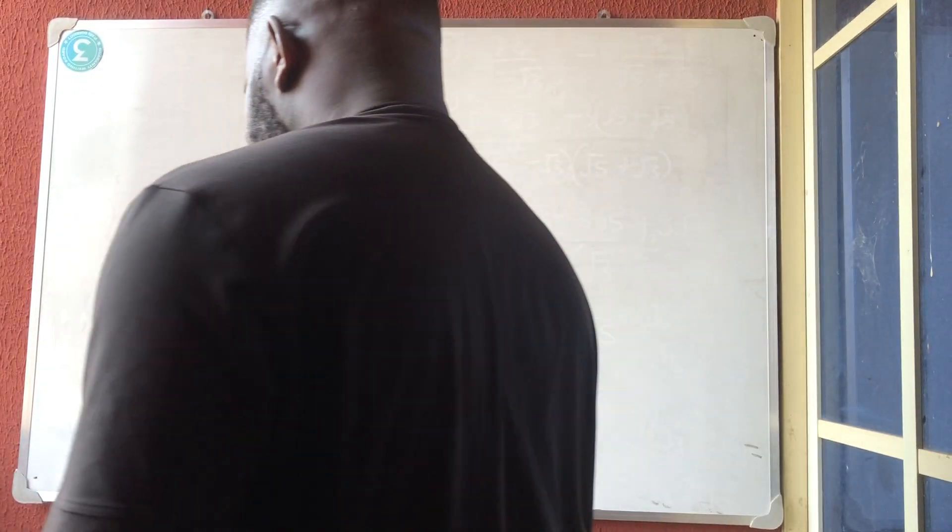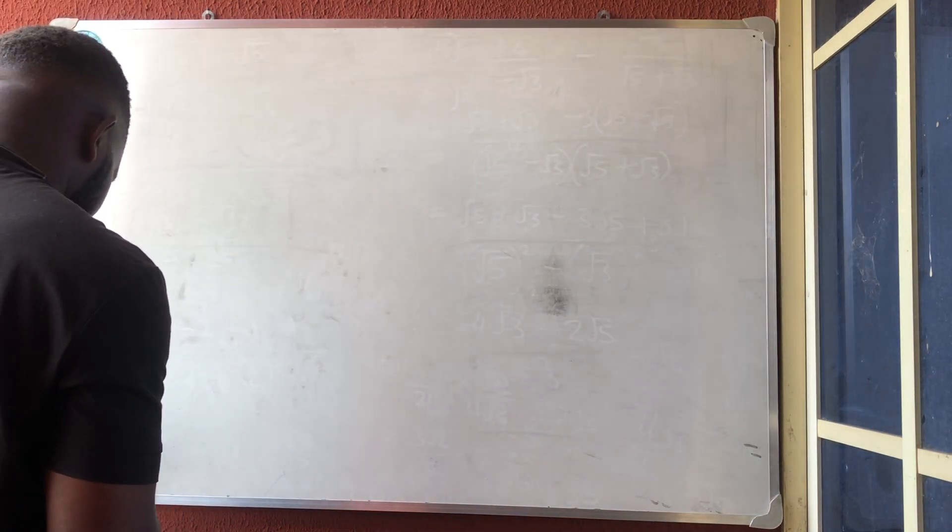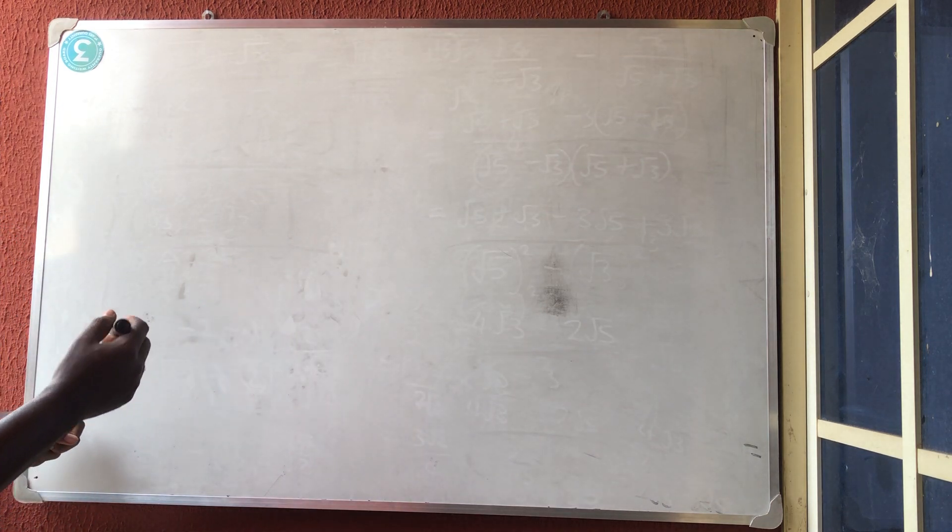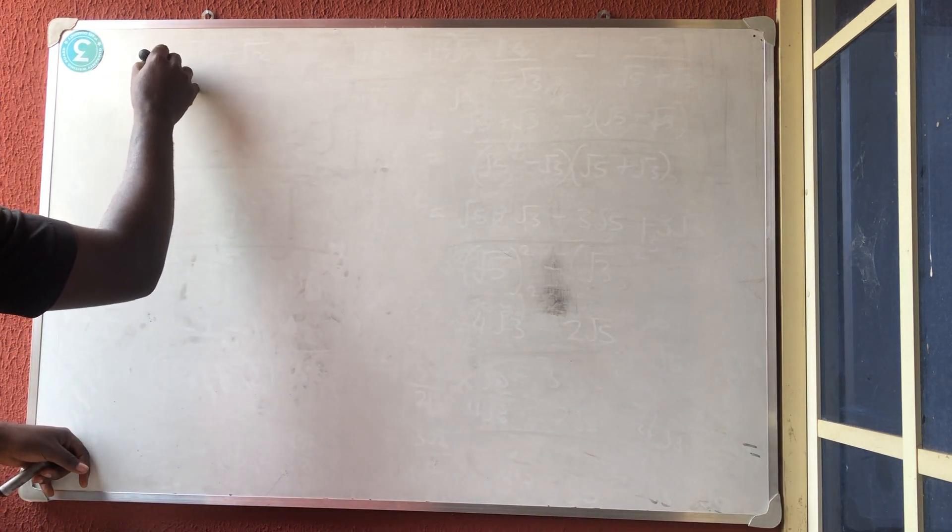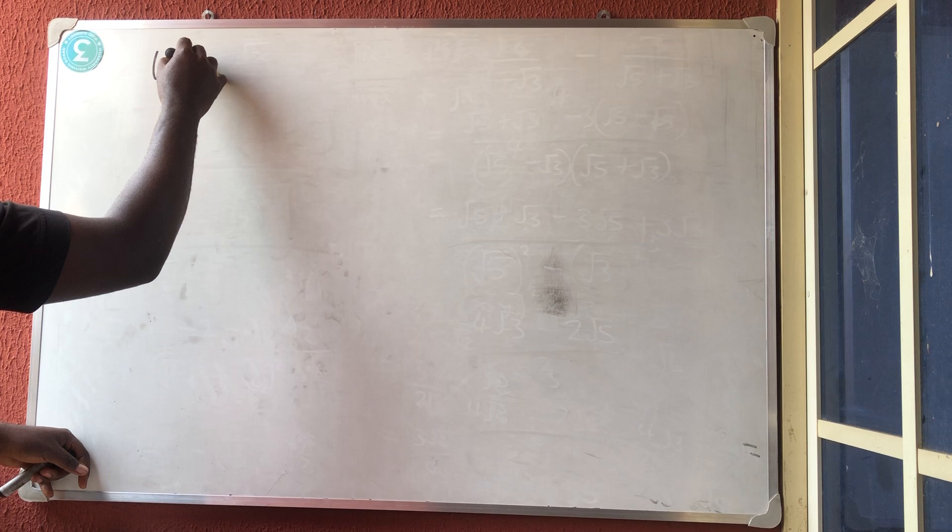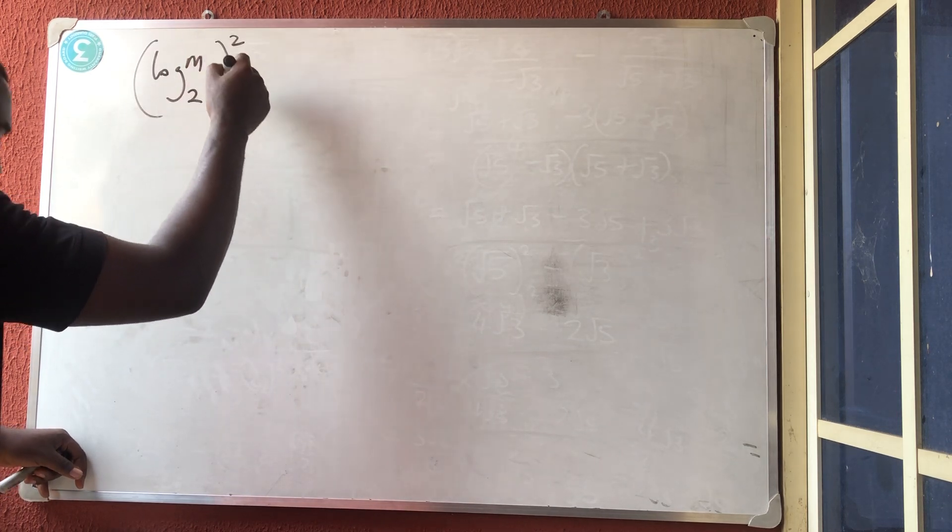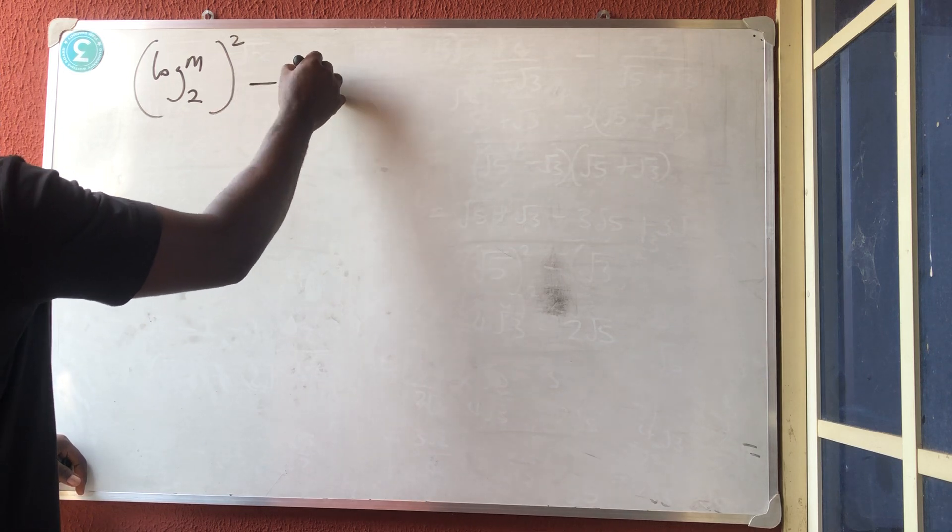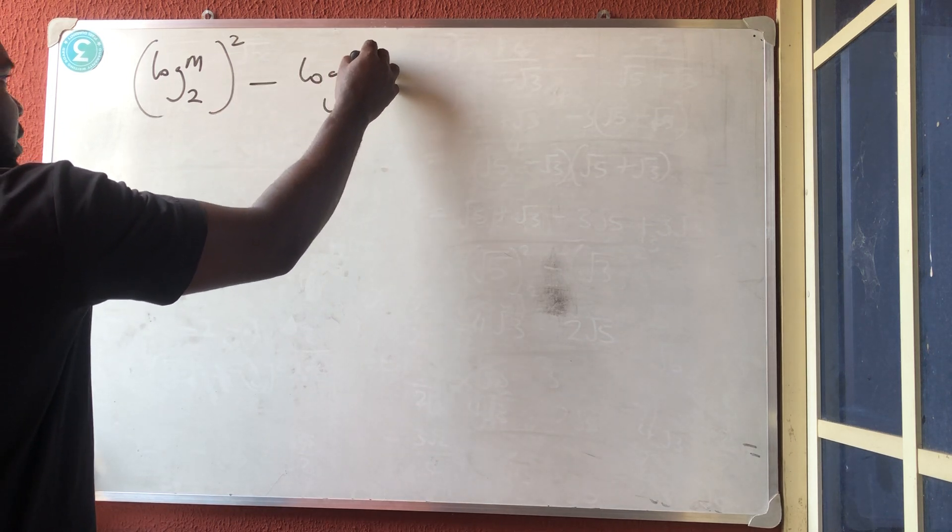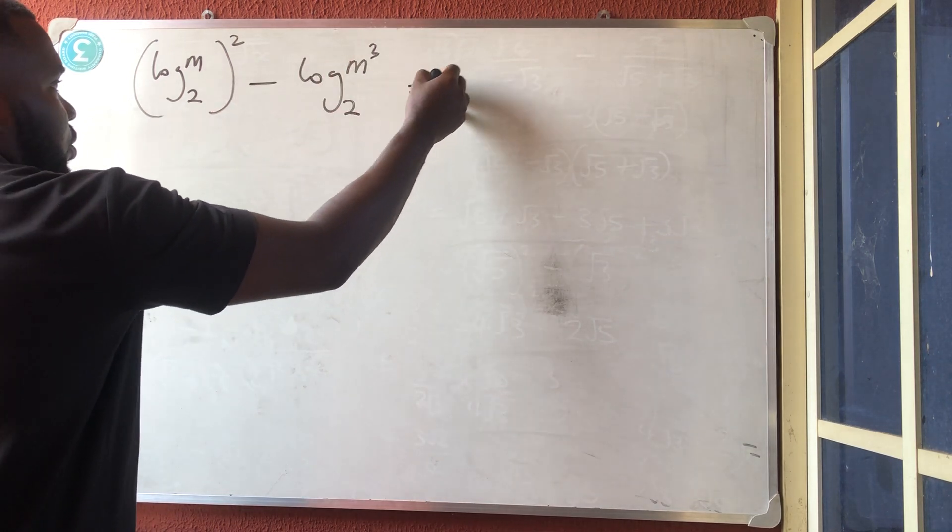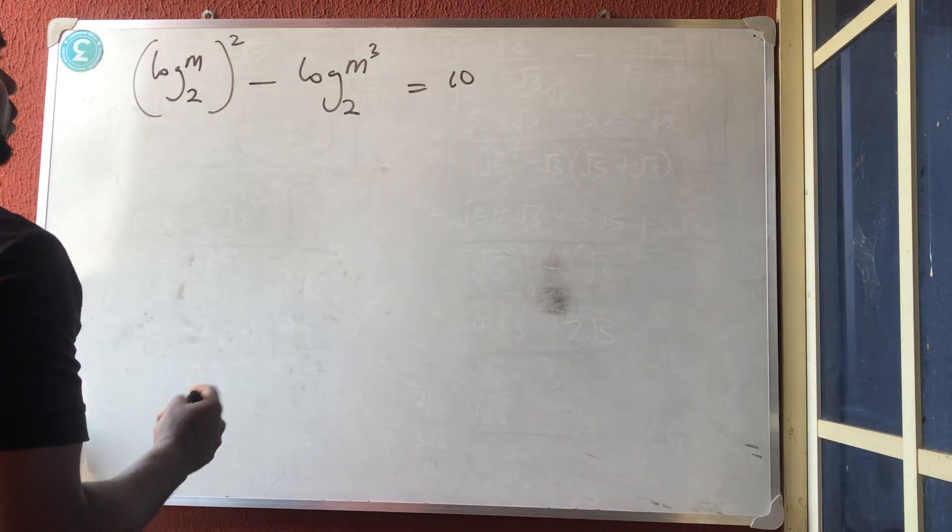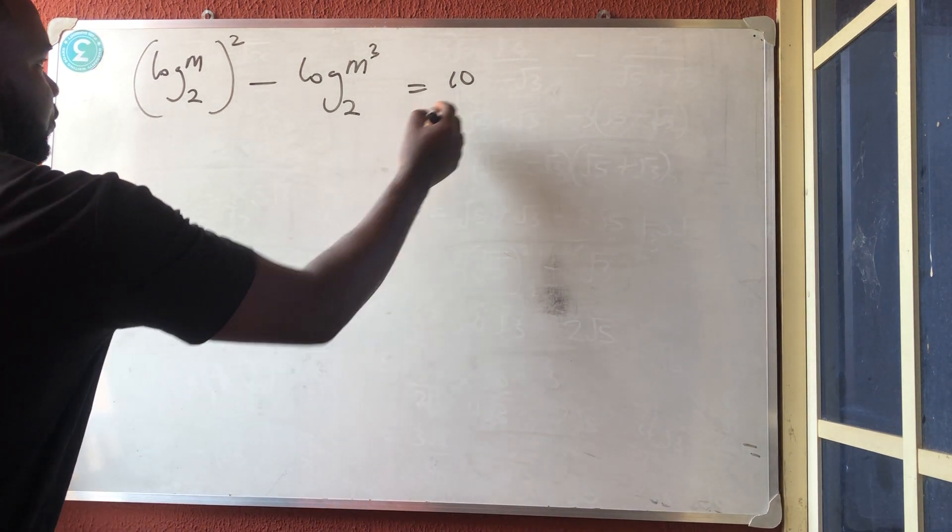Alright, someone gave me a question to help him solve a logarithm after watching my video. The question just said log m base 2 all squared like this, minus log m raised to power 3 base 2 is equal to 10. Alright, then we should find m.